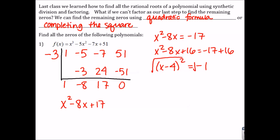Then I can take the square root of both sides. Remember that the square root of negative 1 is i. Then I can add 4 to both sides. So, from completing the square, I get 4 plus or minus i as my roots, and then from synthetic division, I know that x is also negative 3.